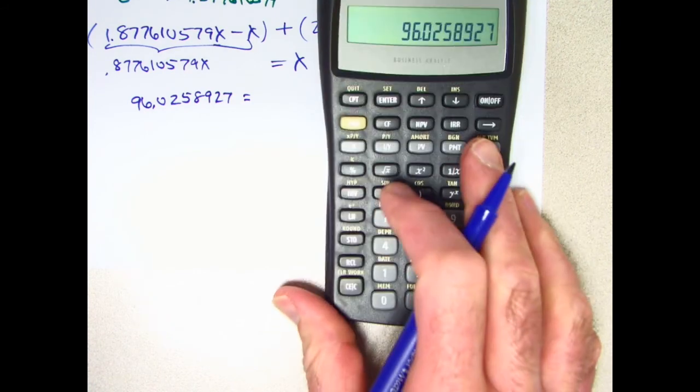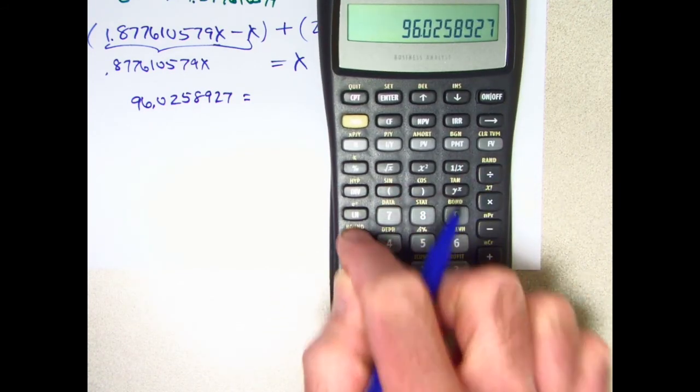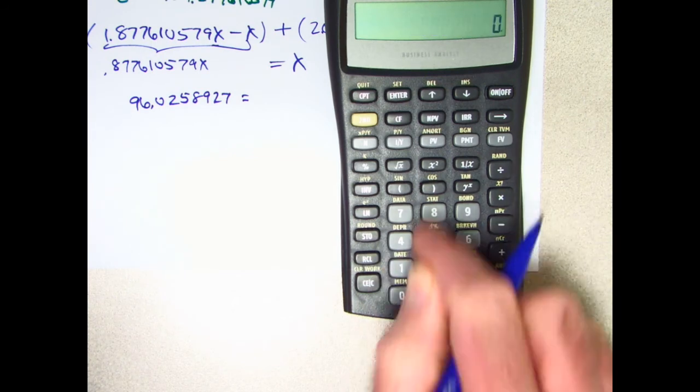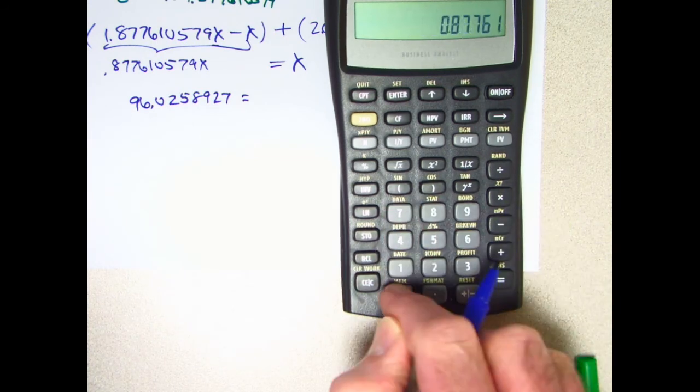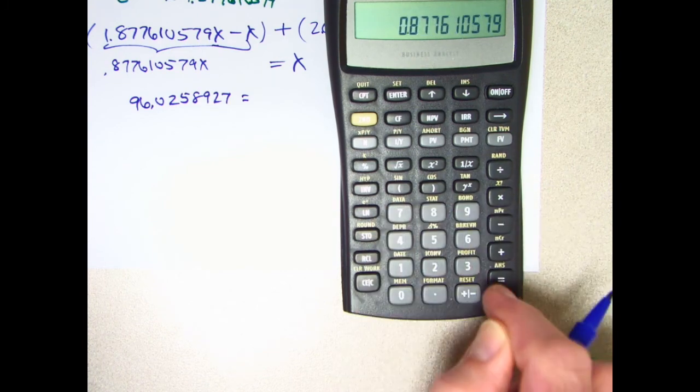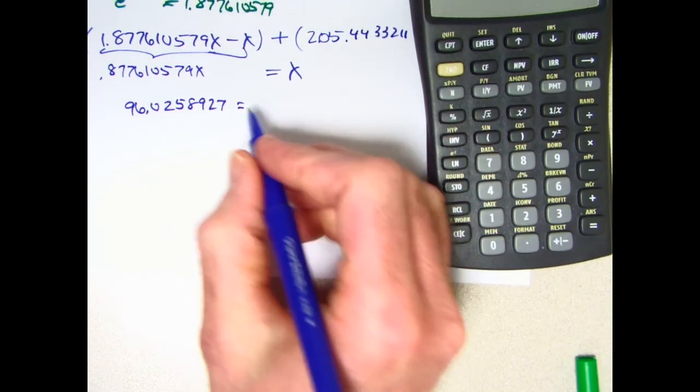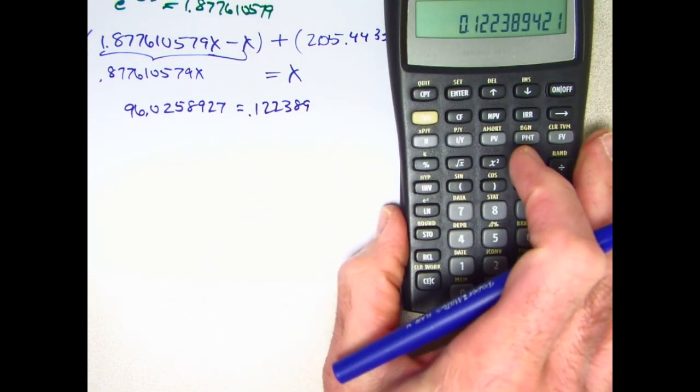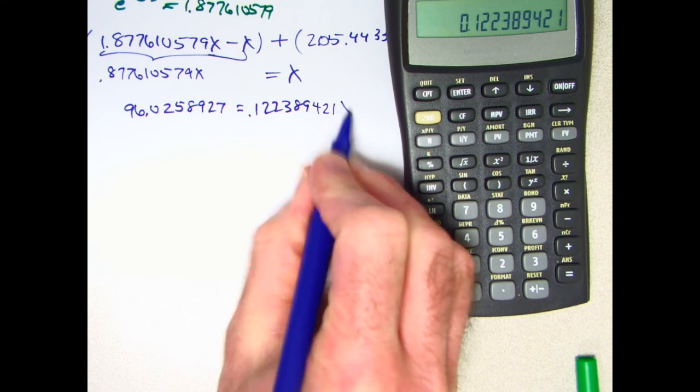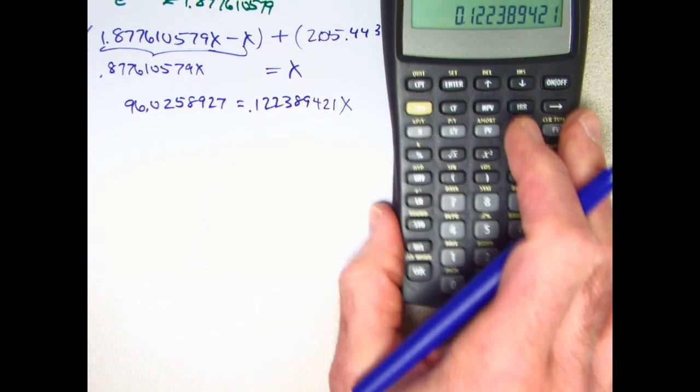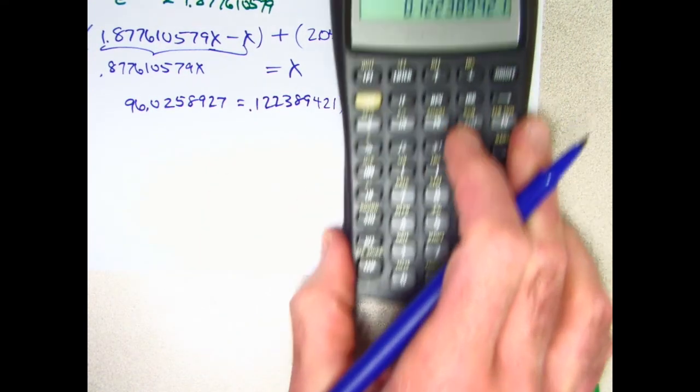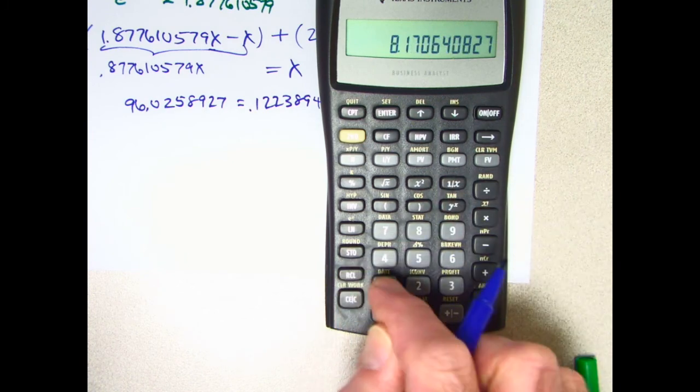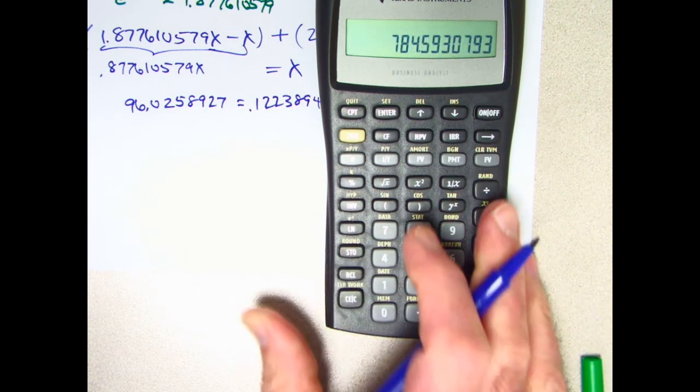Let's go ahead and store this 96. Take 1 minus 0.877610579. Gives you 0.122389421x. Now divide both sides by that. So I'm going to take its reciprocal and multiply what I have stored in register 0. There we go.